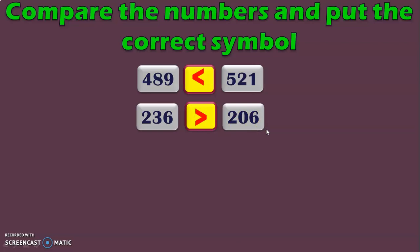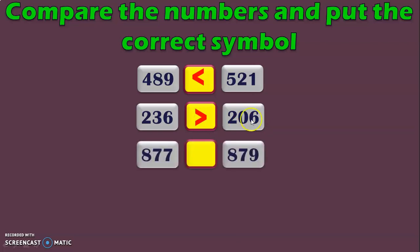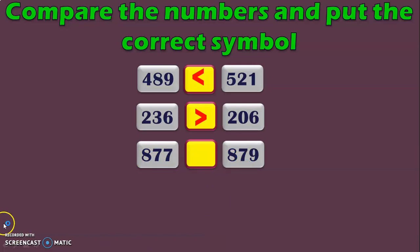Now let us compare 877 with 879. In the hundreds place and tens place we have the same numbers 8 and 7 in both numbers. Next, look at the ones place where we have 7 and 9. We know that 7 is lesser than 9, so you can conclude 877 is lesser than 879.